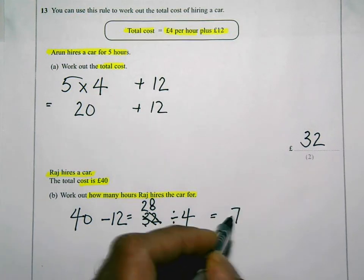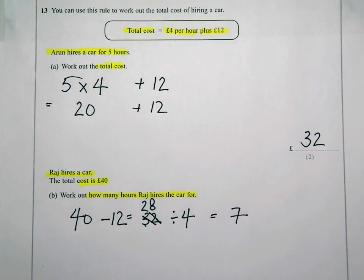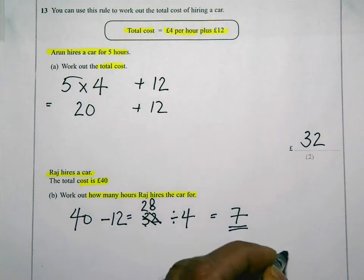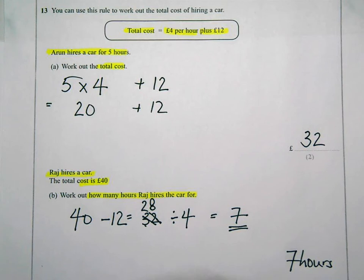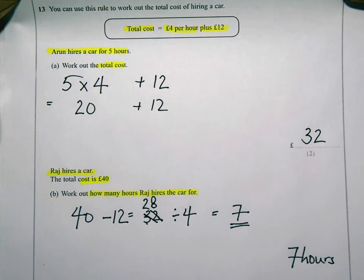...that's seven. Seven. Yep, let's just check this again, make sure that I haven't made a mistake. Forty take away twelve, that's twenty-eight. Twenty-eight divided by four, yep that is seven. So how many hours did he hire the vehicle for? Seven hours, because that's how long he hired the vehicle for.